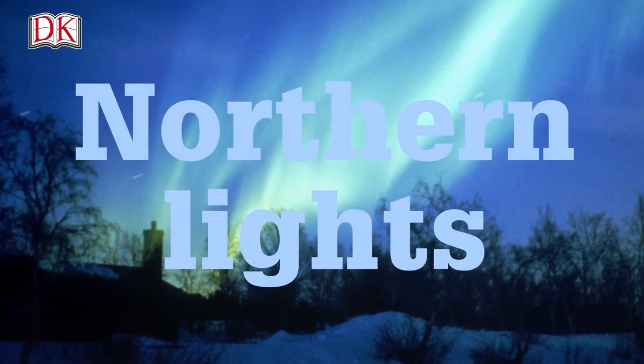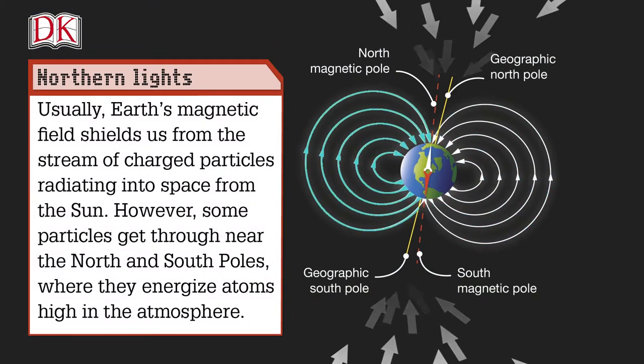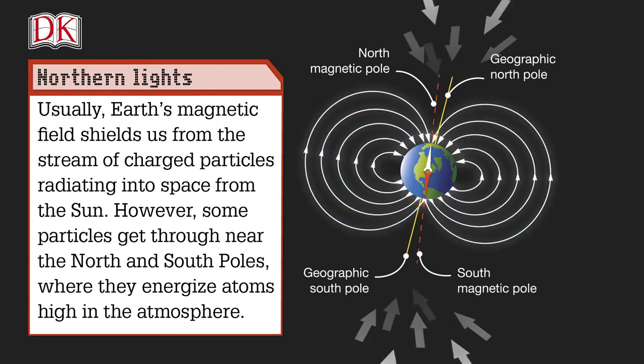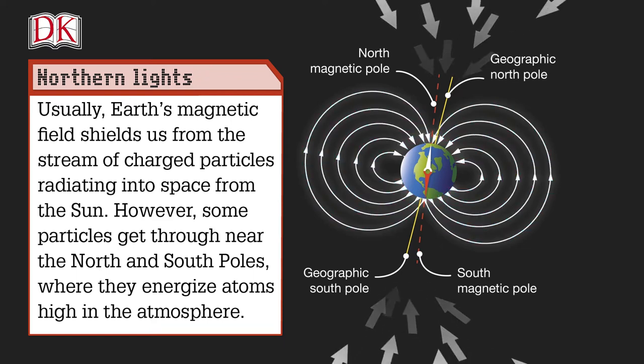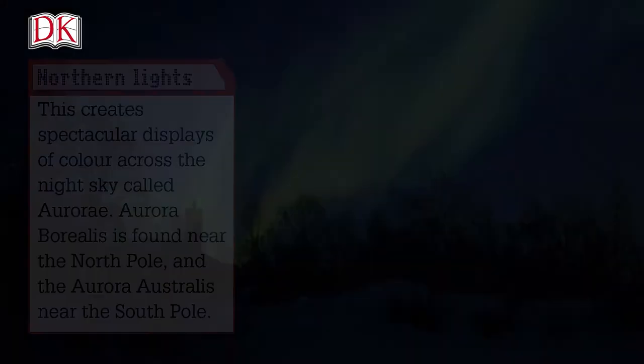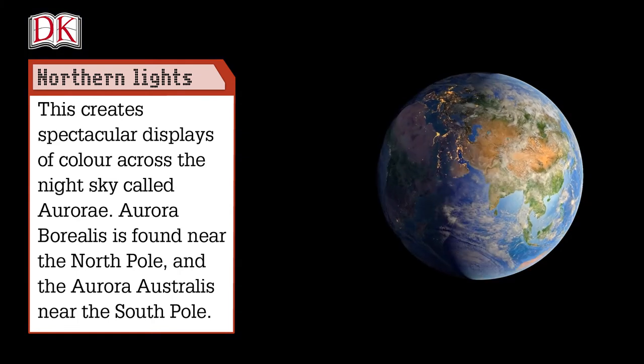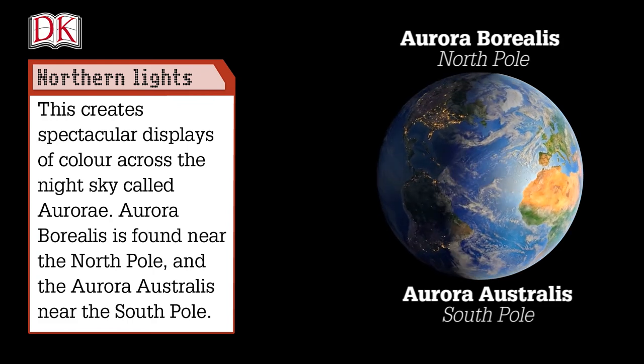Northern Lights. Usually, Earth's magnetic field shields us from the stream of charged particles radiating into space from the sun. However, some particles get through near the north and south poles to energize atoms high in the atmosphere. This creates spectacular displays of color across the night sky called the aurorae. Aurora Borealis is found near the north pole, and Aurora Australis near the south pole.